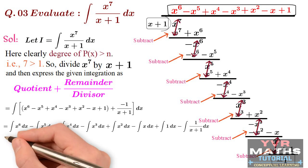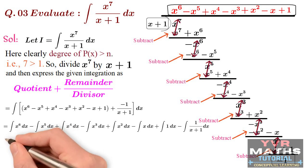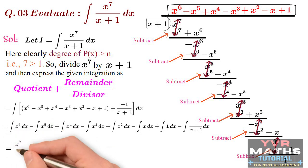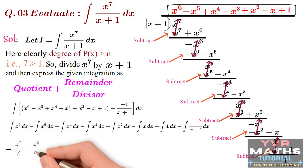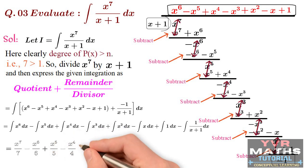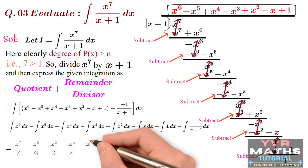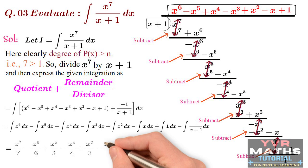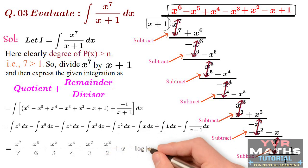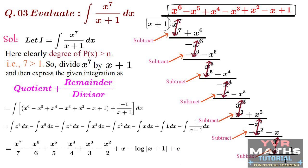The final answer is: x⁷/7 − x⁶/6 + x⁵/5 − x⁴/4 + x³/3 − x²/2 + x − log|x+1| + C. This is the final answer for the given integral.